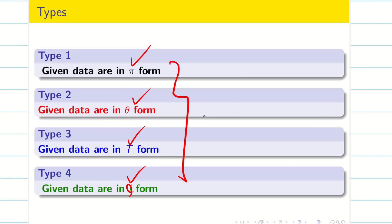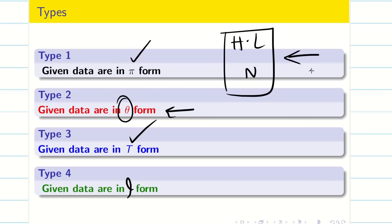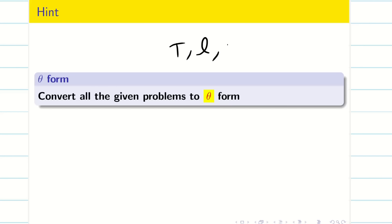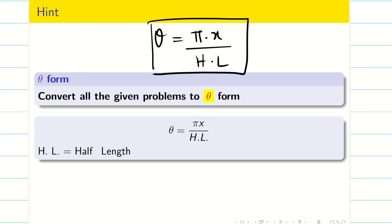Most books solve in pi (radian) form, but I am going to give you a new trick. We don't need radians — it's tough. Instead, I choose to convert everything into theta (degree) form. Whatever problem comes — pi form, T form, or L form — I will convert it to theta form using the formula: θ = π × x / half-length. That is why I keep insisting on finding the half-length first.